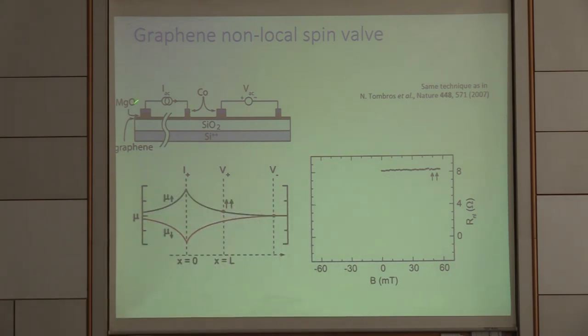We drive the current here, and then we measure the voltage drop non-local at a different part of the graphene. And what actually happens here is, by having this ferromagnetic contact, we get a spin accumulation underneath this contact. Now depending on the magnetization of this contact, we actually get an enhanced population of spin-up or spin-down electrons.